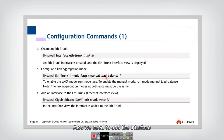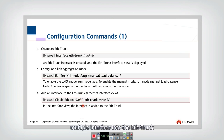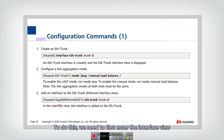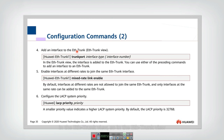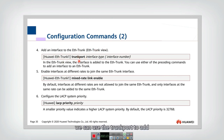We also need to add interfaces to the ether trunk. Typically we need to add multiple interfaces into the trunk. To do this, we first enter the interface view, or we can also add the interface to the ether trunk in the ether trunk view. In the trunk view we can use the trunk port command to add one or more interfaces.